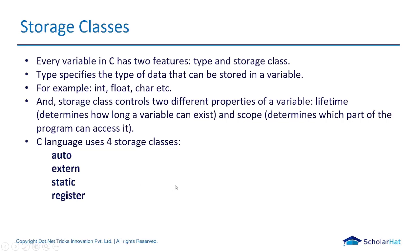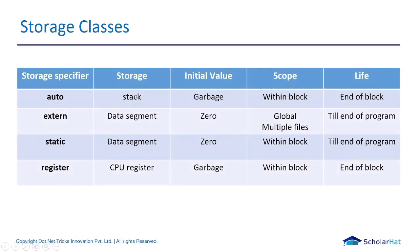We're going to see these one by one in VS Code. Auto has storage in the stack, initial value is garbage, scope is within the block, and lifetime ends at the end of the block. External storage is in the data segment with an initial value of zero. For static, initial value is also zero, scope is global across multiple files or within the block, and lifetime is till the program ends. Let's jump to VS Code and see the auto keyword first.